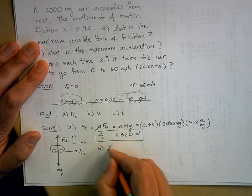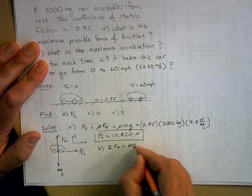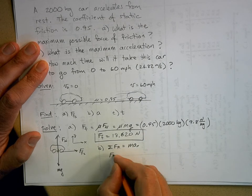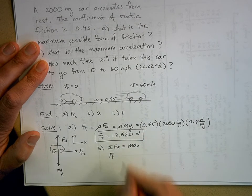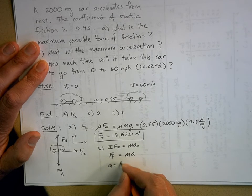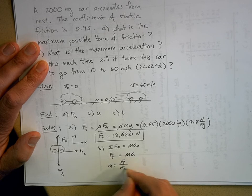For part B, if I sum the forces in the x direction, I get ma in the x direction. Well, there's only one force in the x direction. And that's that force of friction. Equals ma. So a equals the force of friction divided by the mass.